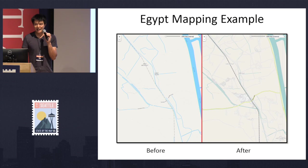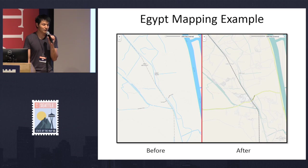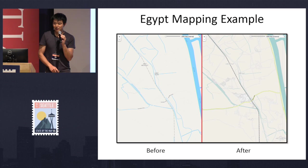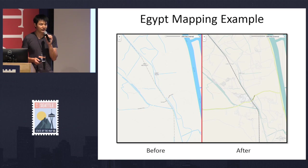To give you an example before and after, this is an area we did in Egypt. With machine-generated roads, our mapper took only a couple of minutes to verify all the roads before submission, versus hours if we had to generate everything manually from scratch. We are continuously improving our algorithm for better quality and more efficiency for mappers to finish the final verification step.